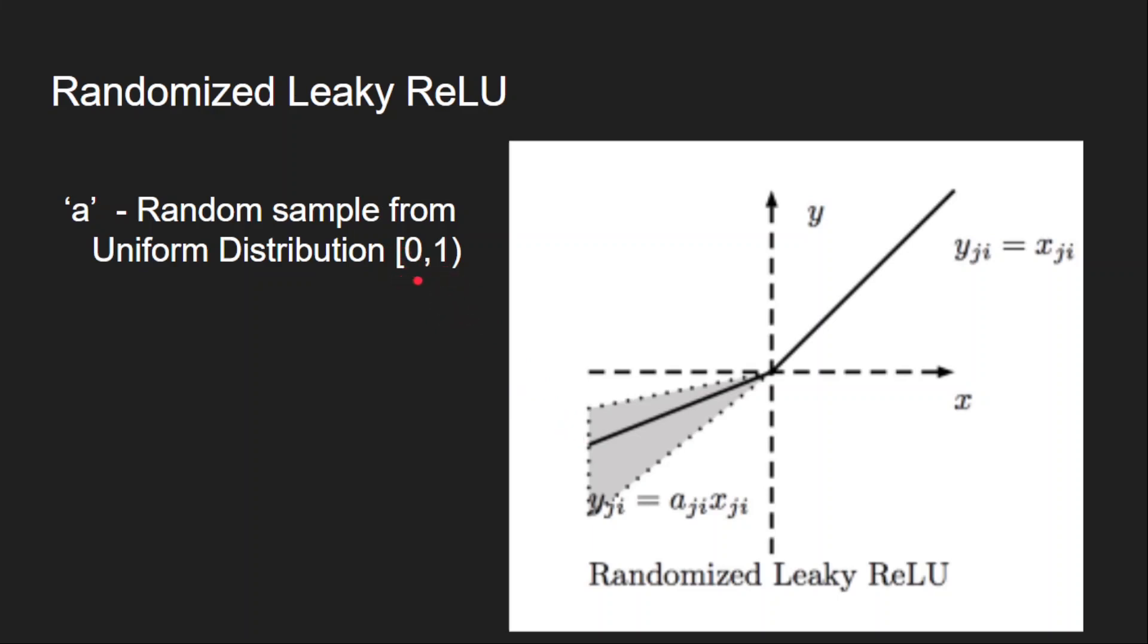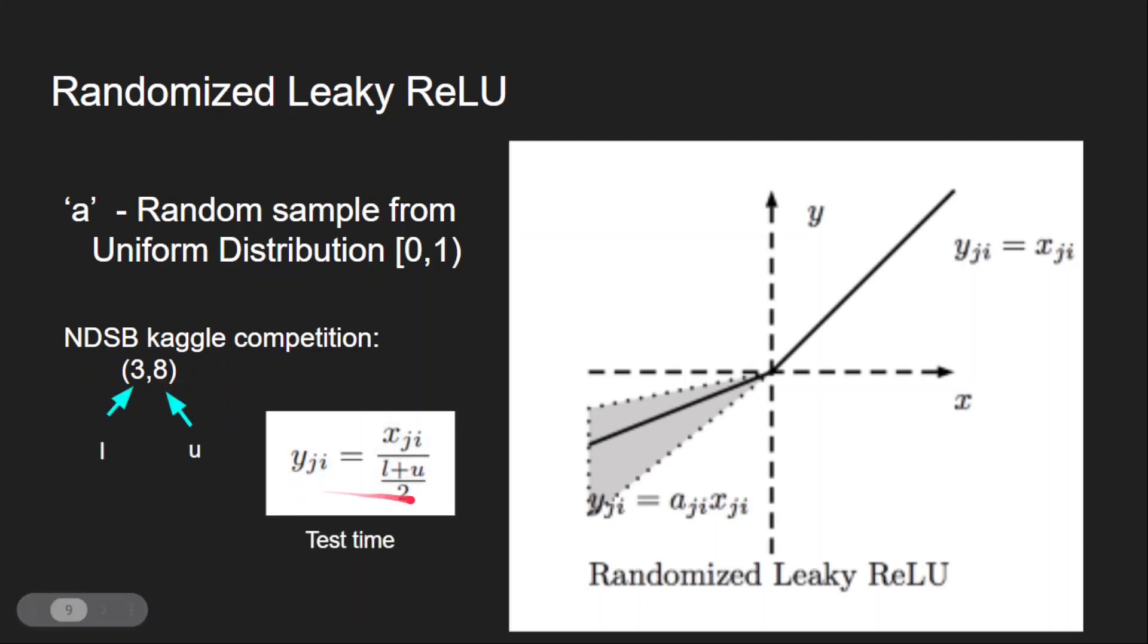So during each training step it will fetch one random sample between 0 and 1 and it will use that for the activation. These 0 and 1 are commonly used but you can use your own range. There is no restriction here. In fact, in NDSB Kaggle competition the winners used the range of 3 and 8. This is during the training time but what about the test time? So during the test time we take the average of the upper limit and lower limit and we calculate the output using this formula.